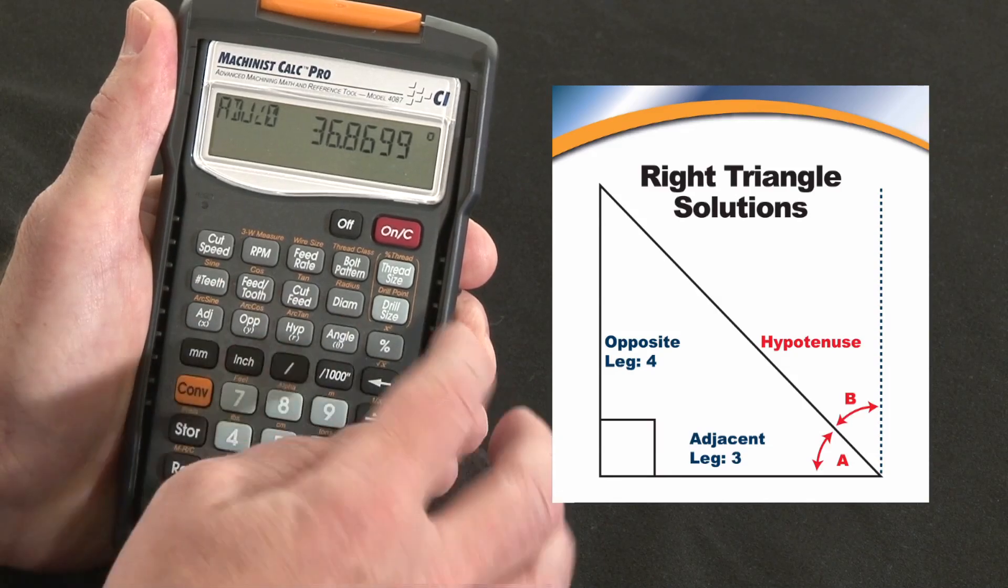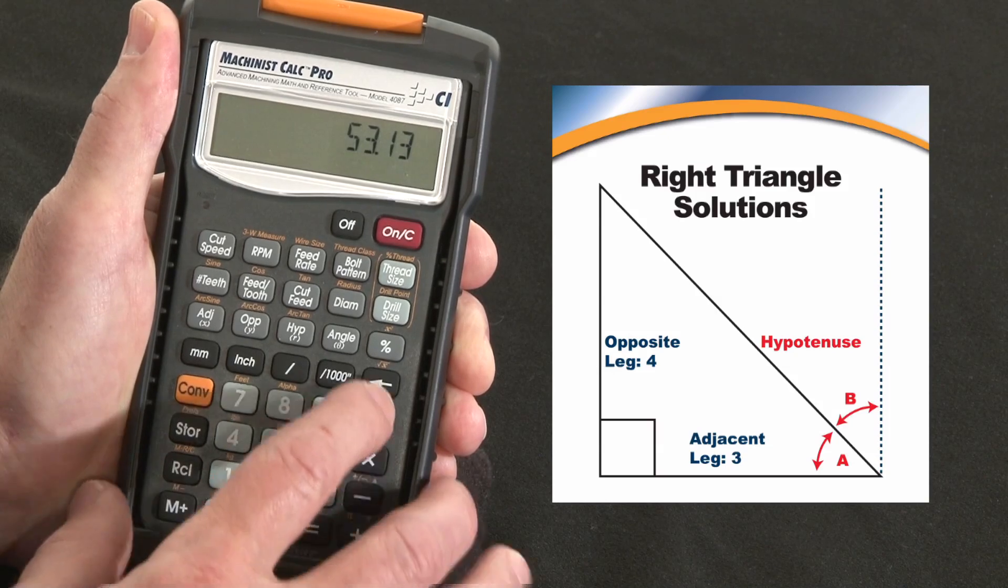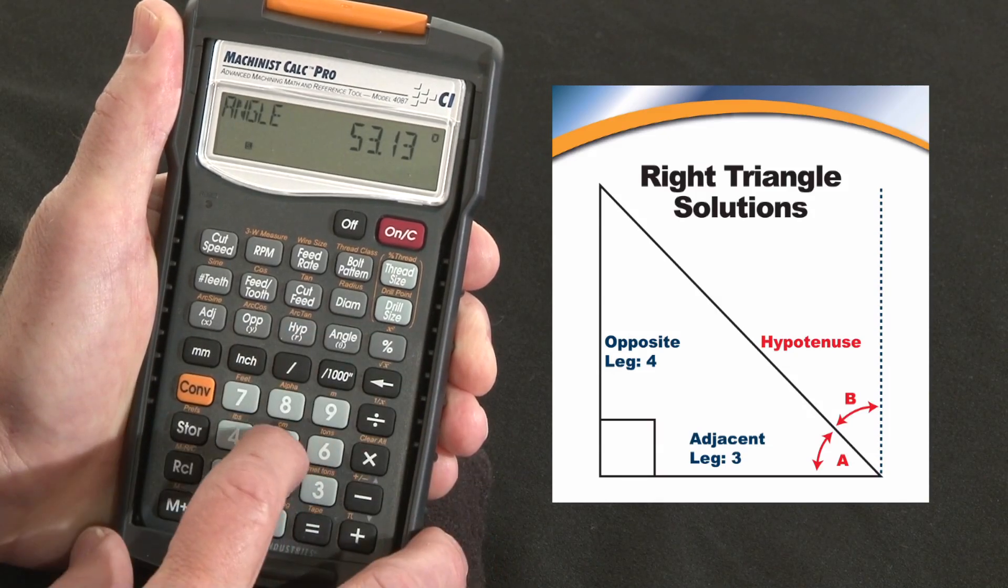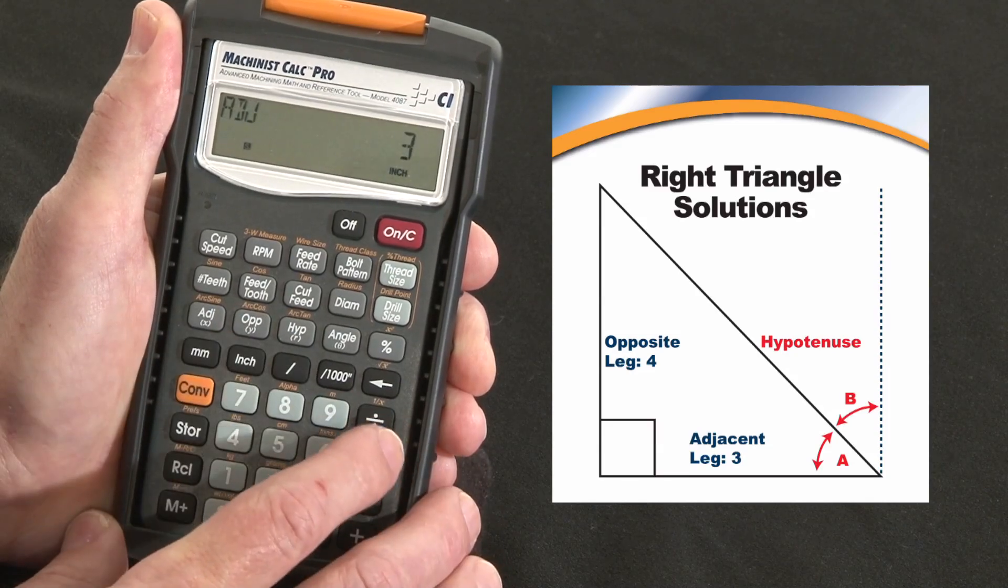Now you can enter it in any units or any backwards or forwards. Let's say you knew your angle only, fifty-three point one three. There's my angle and I knew I measured a five inch hypotenuse. Let's go calculate the leg lengths. There's my four inch leg, there's my three inch leg.